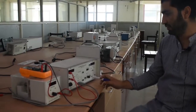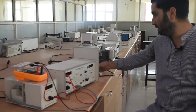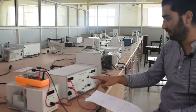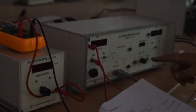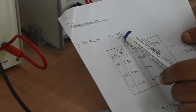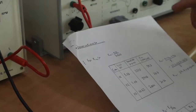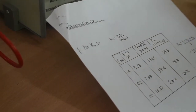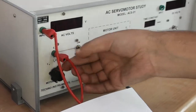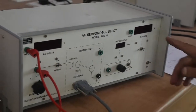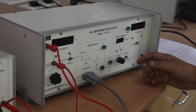Now we will see practically how to obtain Km, Kn, and the time constant using the AC servo motor kit. To calculate Km, you cannot read it directly — you must evaluate the formula: Km = π·n / (30 · EC(s)), where π and 30 are constants, EC(s) is the control voltage, and n is the motor speed.